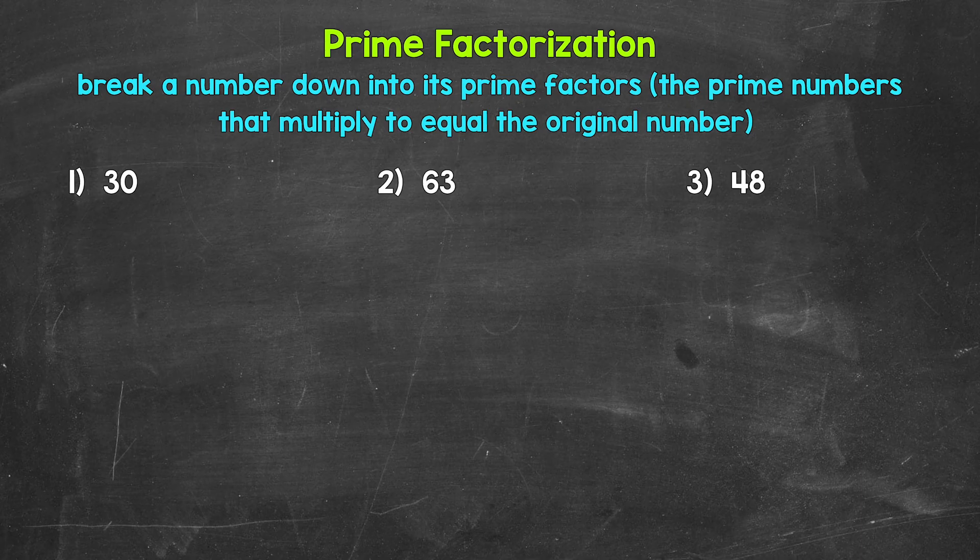For example, 2, 3, 5, 7, and 11 are all prime numbers. Let's jump into our examples, starting with number 1, where we have 30.